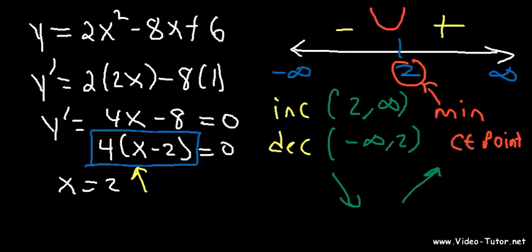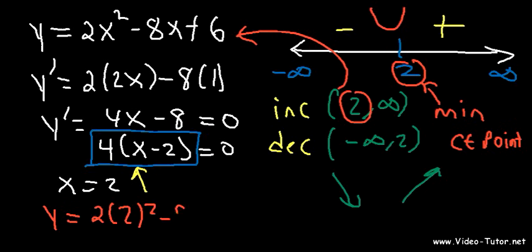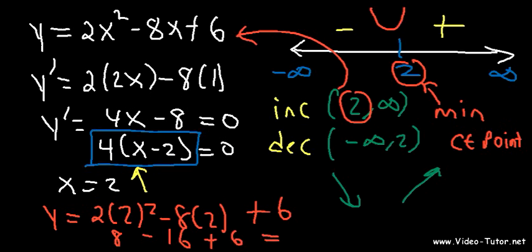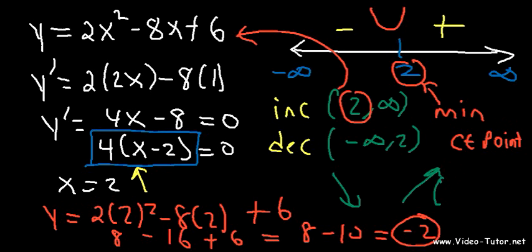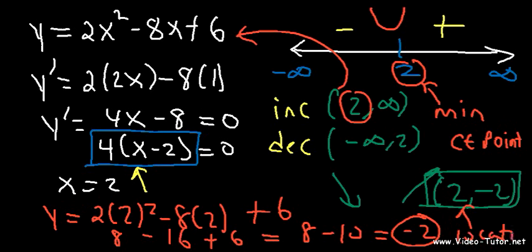If we want to find the minimum value, you need to take your x value and plug it in to get y. So y is equal to 2 times 2 squared minus 8 times 2 plus 6. 2 squared is 4, times 2 is 8; 8 times 2 is 16; so 8 minus 16 plus 6 gives negative 2. So we have a local min located at x equals 2, which has a value of negative 2, and the critical point is (2, negative 2). The x tells you the location and the y variable tells you the value of the minimum or maximum.